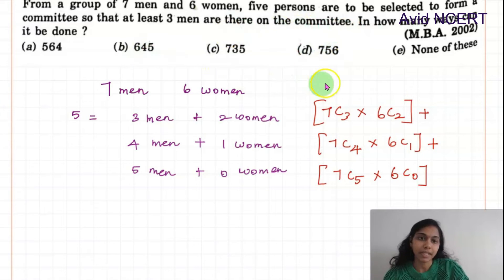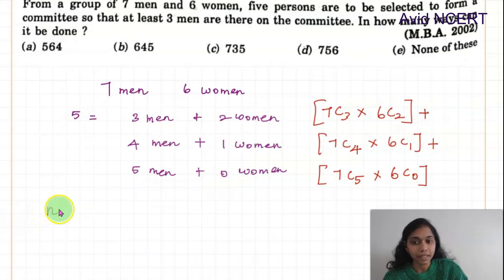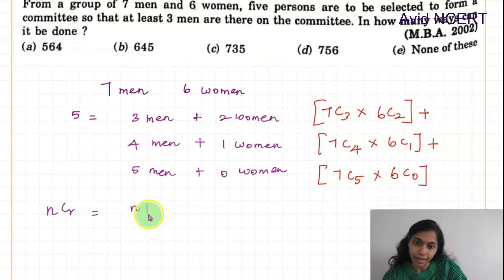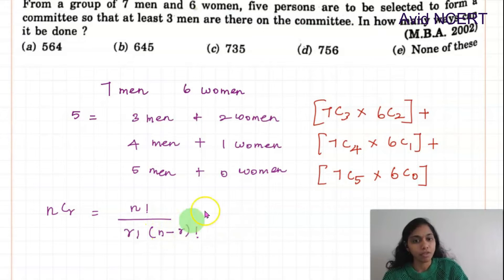To solve this, we use the nCr formula: nCr = n! divided by r! times (n − r)!. This is the formula we will be applying to each of the three combination terms.